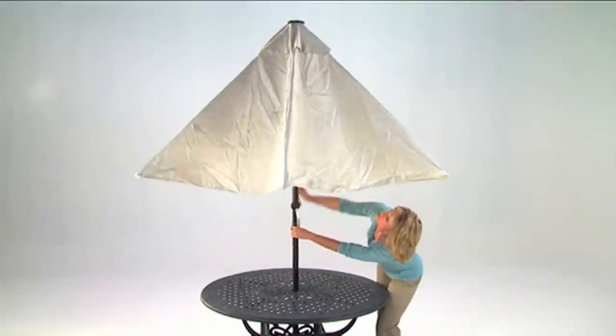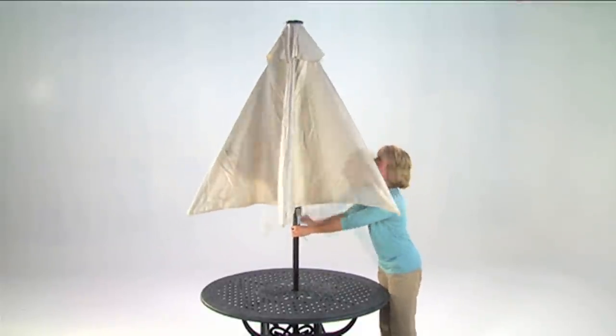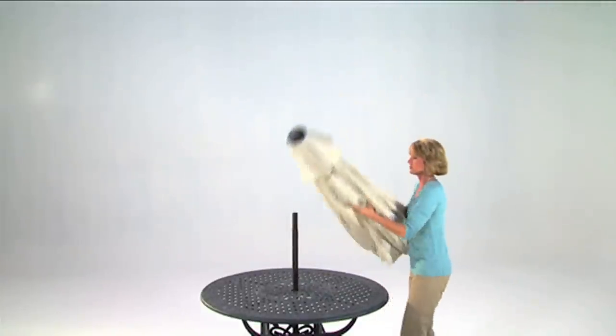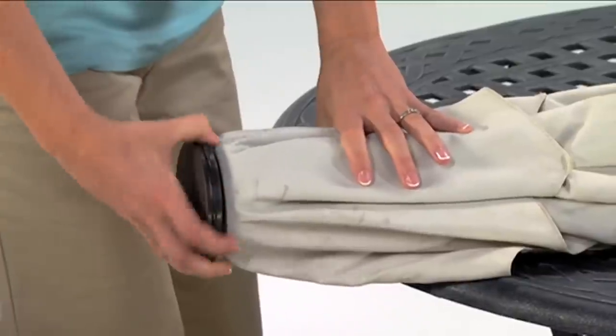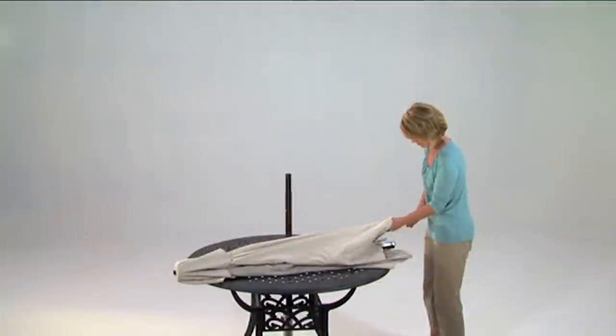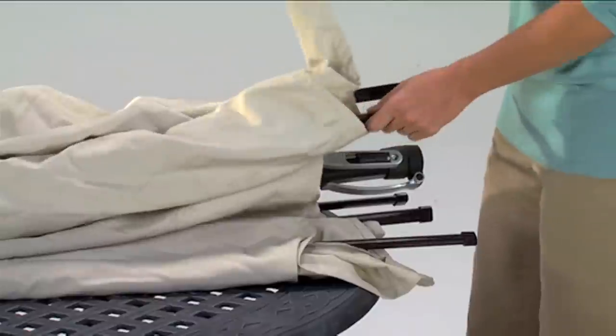First, close your umbrella and remove the lower pole section. Next, lay the umbrella on top of your table and remove the finial cap. Then, remove your umbrella's canopy and set it aside.